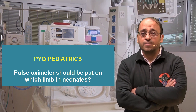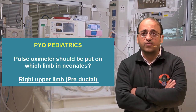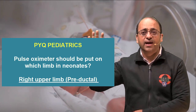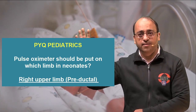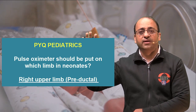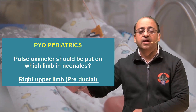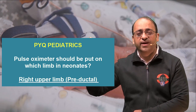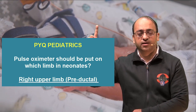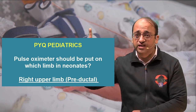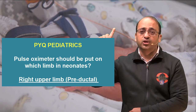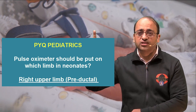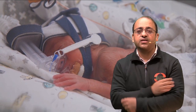Remember, it is always the right upper limb. The right upper limb is always preductal — that's the convention for using pulse oximetry in neonates.